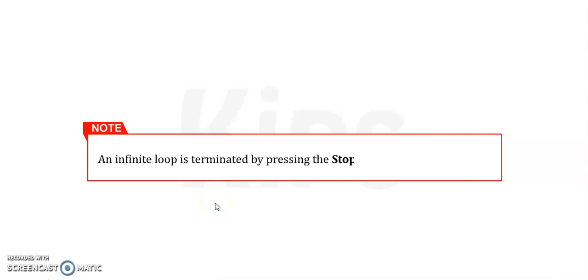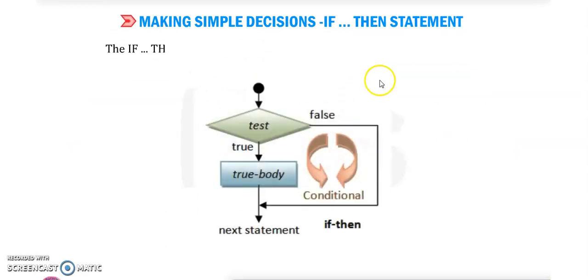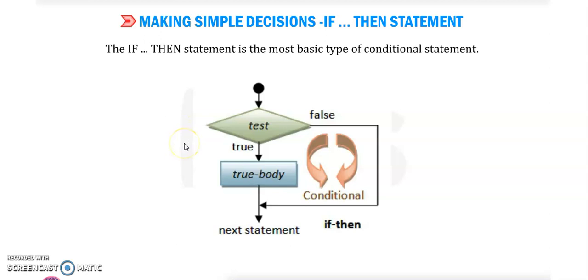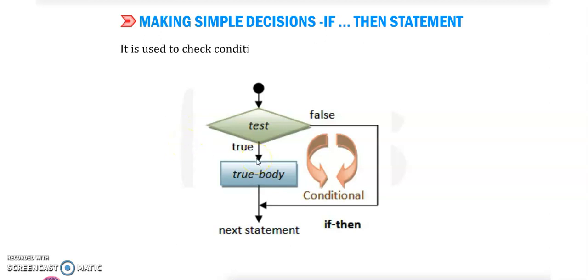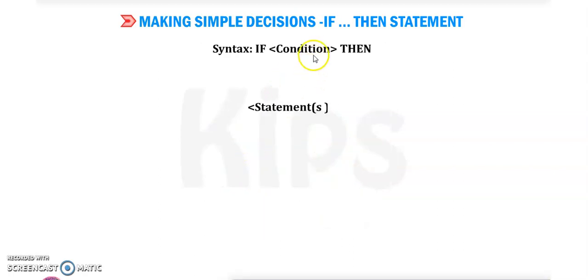For stopping this infinite loop, it is terminated by pressing the stop button from the toolbar. Next is making a simple decision program. We can make this program with the if-then statement. The if-then statement is the most basic type of conditional statement. It is used to check conditions which contain comparison operators, and it checks only the true condition of the program.